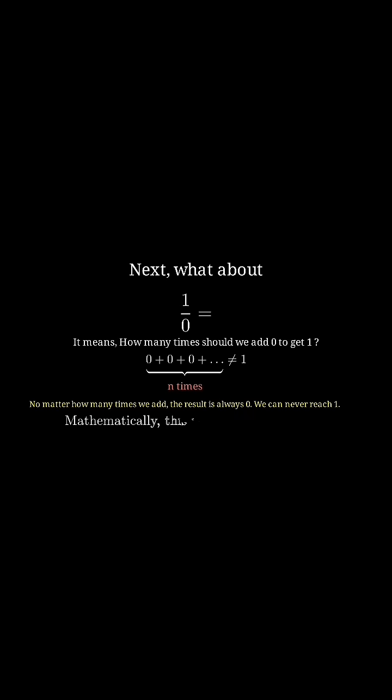Next, what about 1 by 0? It means how many times should we add 0 to get 1. No matter how many times we add, the result is always 0. We can never reach 1. Mathematically, this is called undefined. Therefore, 1 divided by 0 equals undefined.